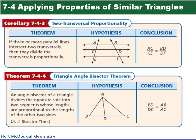Here's a corollary and a theorem. The two-transversal proportionality states if three or more parallel lines intersect two transversals, then they divide the transversals proportionally. So in this case, we have three parallel lines here. We have our two transversals. And so what it's telling us is that AC is to CE, which is this piece here, as BD is to DF. And that's what our conclusion tells us.